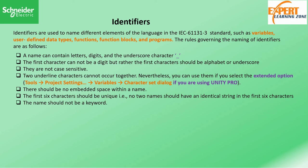The rules governing the naming of identifiers are as follows: the name can contain characters, digits, and an underscore. The first character cannot be a digit — it should be a letter or an underscore. Identifiers are not case sensitive, and two consecutive underscore characters cannot occur together. You can enable extended character support in Unity Pro by going to Tools > Program Settings > Variables Character Set and selecting the extended option.